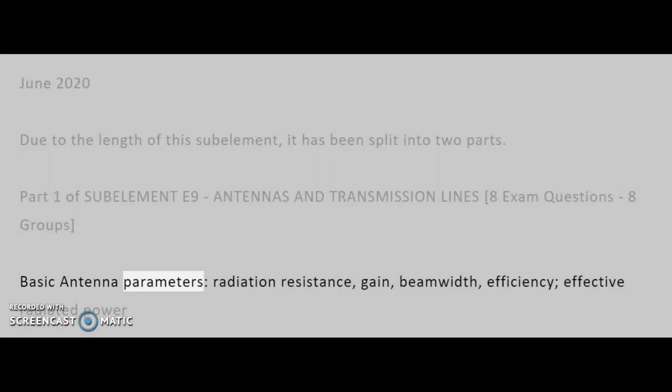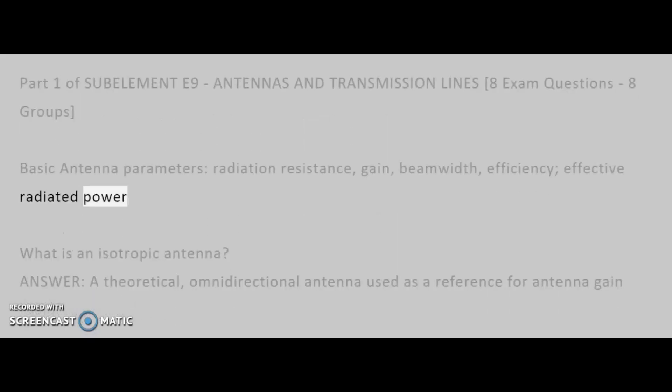Basic antenna parameters: radiation resistance, gain, beam width, efficiency, effective radiated power.